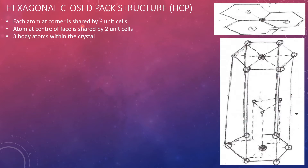Each atom at the corner is being shared by six unit cells, which can be seen from this diagram. If you make unit cells beside one unit cell, you can see that there are three unit cells, and this atom is being shared by those three unit cells. Similarly, considering unit cells above these three, this atom is shared by a total of six unit cells. Also, the atom at the center of the face is shared by two unit cells — this unit cell as well as the unit cell above it.